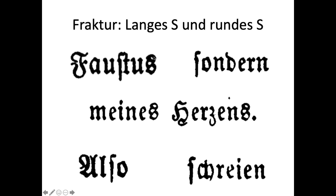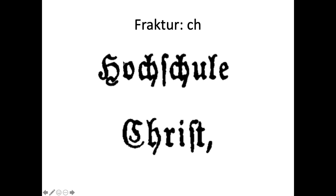Let's compare the long S and round S again. In 'Faustus' — the long S in the middle, tiny knob at the back but none at the front — and the round S at the end. In 'Sonder' the long S begins the word. In 'meines Herzens' (of my heart), the round S's appear at the end of words — this is a genitive construction. In 'also' (therefore), the A is pretty weird and the S is of course strange too: A, L, S, O.